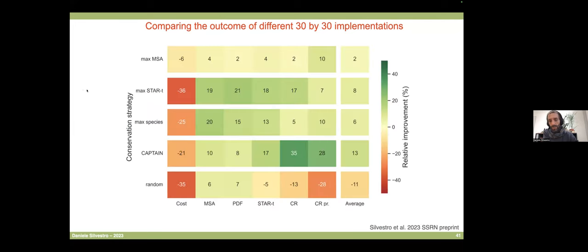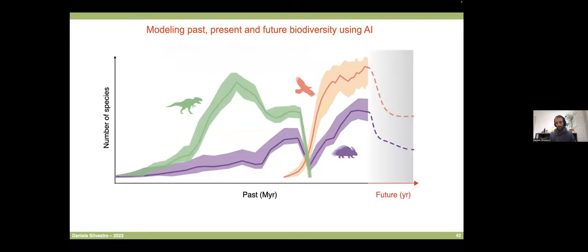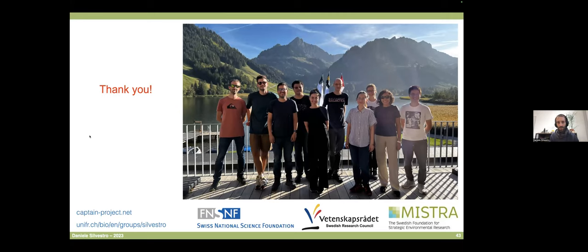This justifies using a more complex model rather than a simple metric when prioritizing conservation efforts. We have a preprint examining many more statistics, which we hope will convince both the scientific community and policymakers that we need models to do a good job implementing 30x30. Overall, our group uses AI models to predict and estimate how biodiversity has evolved in deep time, and we hope to use AI to predict the future of biodiversity and help bend the curve of biodiversity loss. I'd like to thank my lab for contributing to these projects and the symposium organizers for having me.